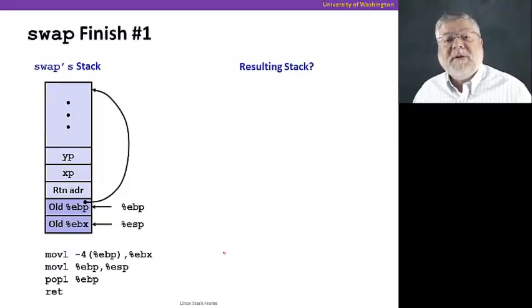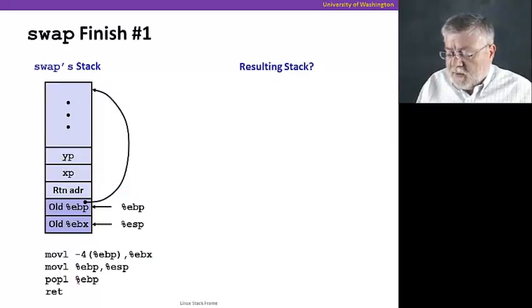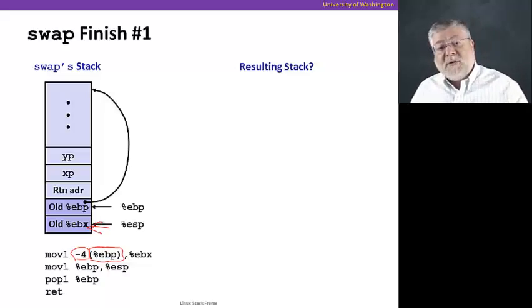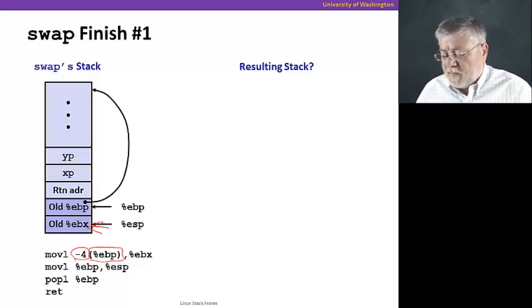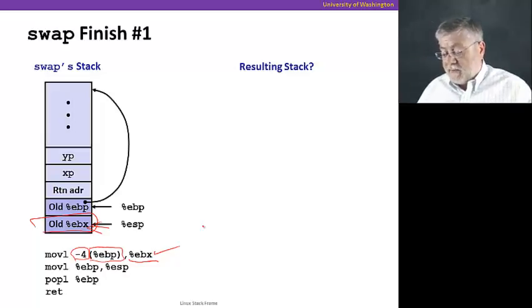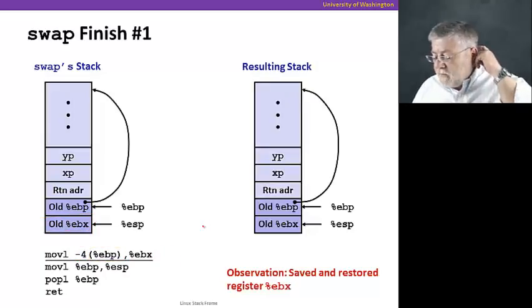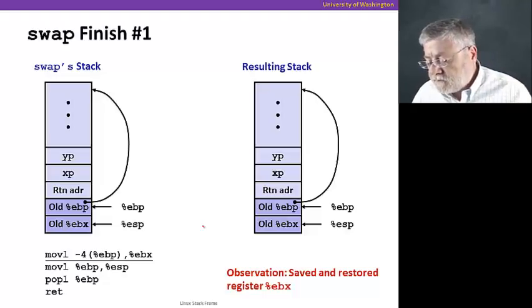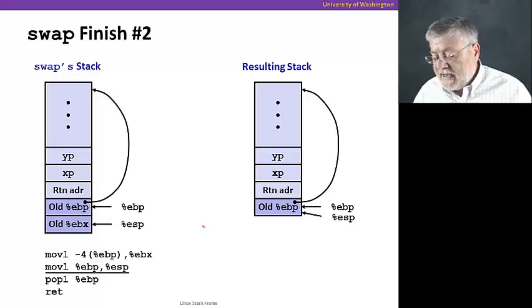let's skip ahead and talk about the finish portion of swap, those instructions at the end, that clean things up. Here we see a move instruction that takes the base pointer, subtracts 4. So, we're actually going to look at this location, 4 down from the current value of our base pointer. And, go take that value and put it in EBX. In fact, that was the old value of EBX. So, we're now going to restore the value of EBX to what it was previously. So, we've saved and restored the register EBX.